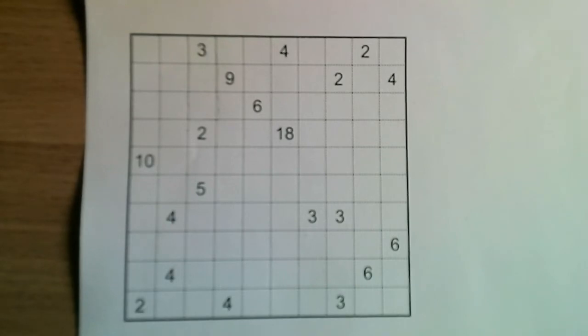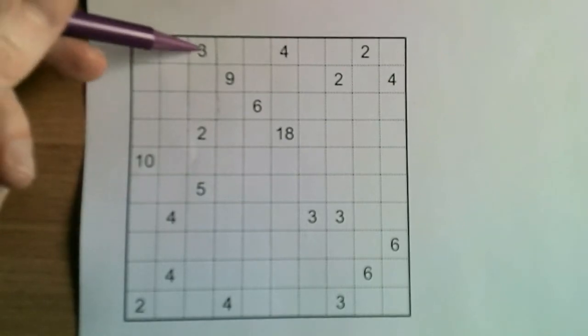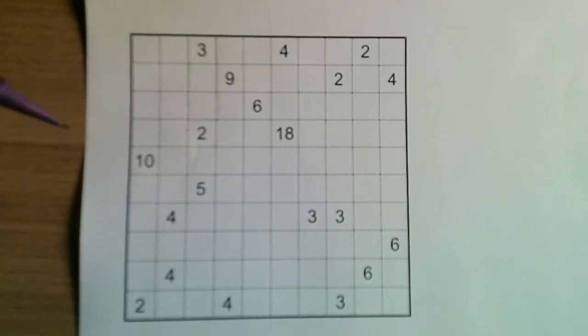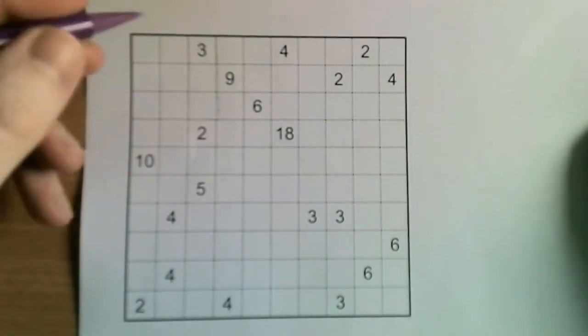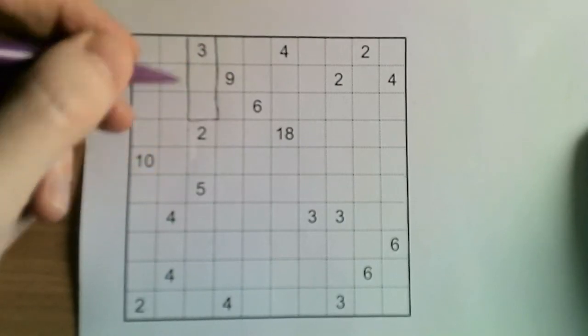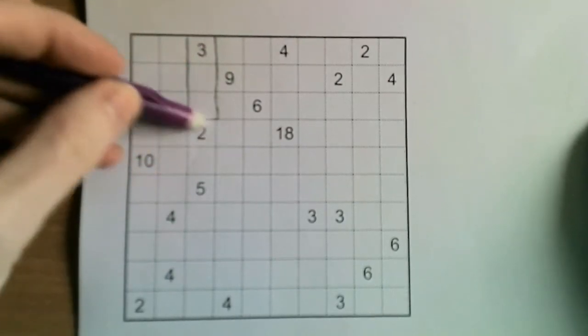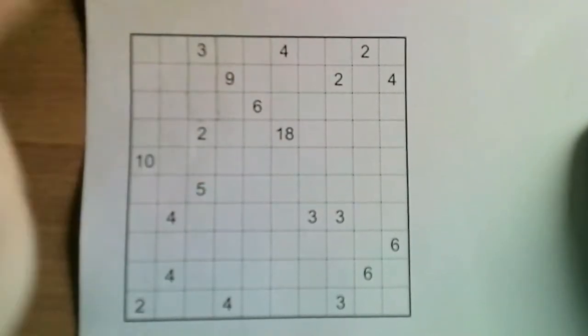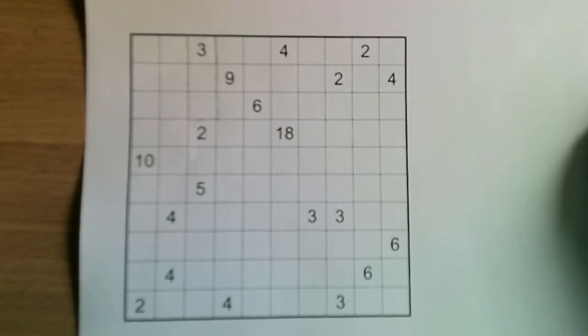The rules of the game are that you need to divide this grid into a series of rectangles, and each rectangle contains one number, and that number tells you the size of the region it belongs to. So this three here, for instance, could belong to a region containing these three squares. And that's it for the rules, so nice and straightforward in terms of rules, and let's have a look at how to solve a puzzle.